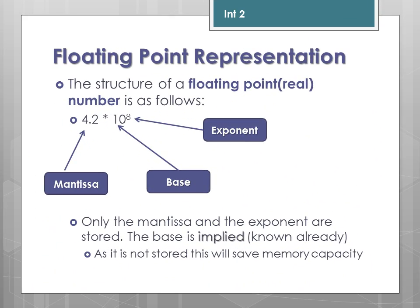The structure of a floating point number is as follows. The mantissa is that part there. The base is — at the moment — a base 10 number, and the exponent is a small number in superscript. Now, only the mantissa and the exponent are actually stored. We know the base, so this is what's called implied. This means that it's known already, and if it's not stored, it will save on memory capacity.